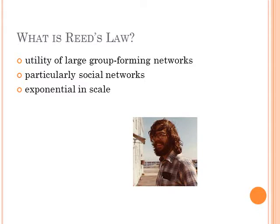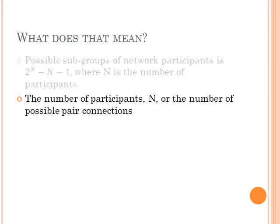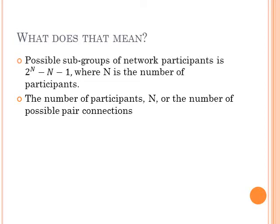Reed's Law bases value on the number of subgroups that can be formed within the network, rather than the number of connections of two nodes within the network, as found in Metcalfe's Law. The number of possible subgroups that can be formed from network participants is 2 to the n minus n minus 1, where n is the number of participants.